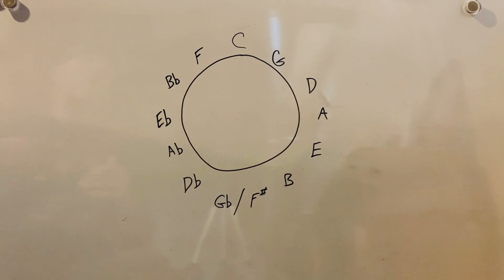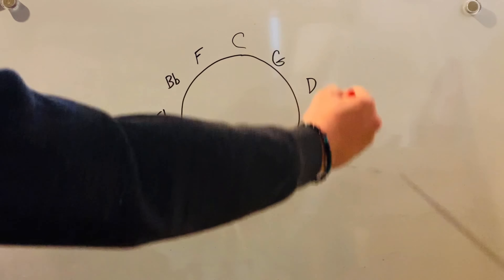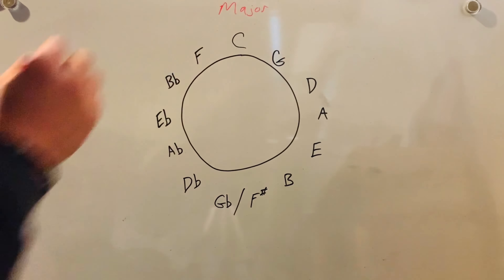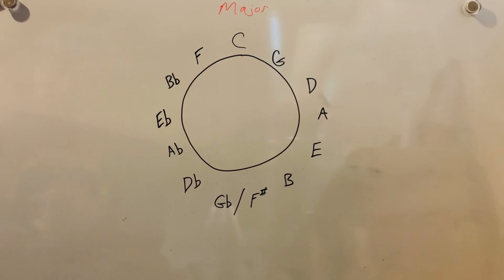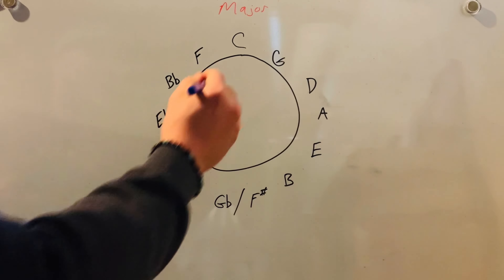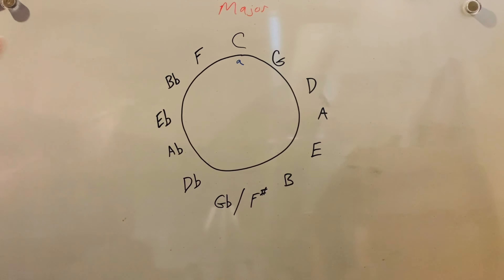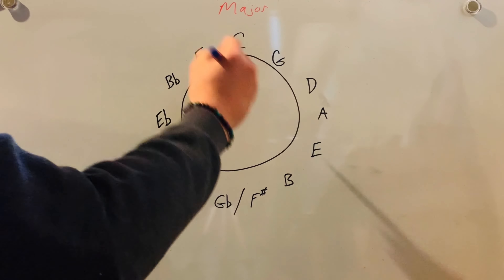So let's talk about keys — like a key of C or a key of G. These would be considered major keys. Now, if you understand your theory and you understand relative minors, every major key has a relative minor key. And you'll see on the Circle of Fifths they're usually written this way — the major on the outside and the minor on the inside.